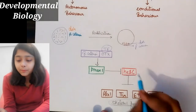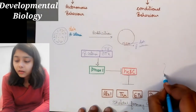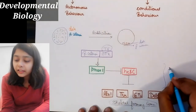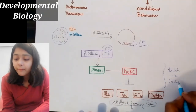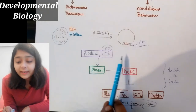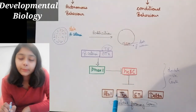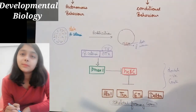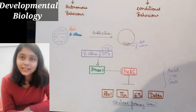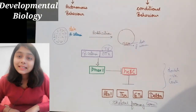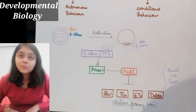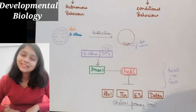This whole event in micromere is called the double negative gate, because PMAR1 inhibits someone who was already inhibiting — so a double inhibition leads to gene activation. This is our embryonic development topic, which is commonly asked in CSIR and NGRF exams. Best of luck, thank you.